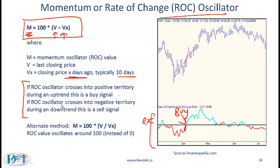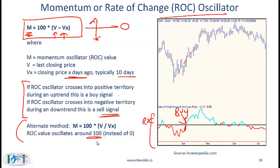If the ROC oscillator crosses into negative territory during a downtrend, this is a sell signal. An alternate way to calculate the indicator uses the formula M equals 100 times V divided by the value of price x days ago. This causes the oscillator to oscillate around 100 instead of around 0.